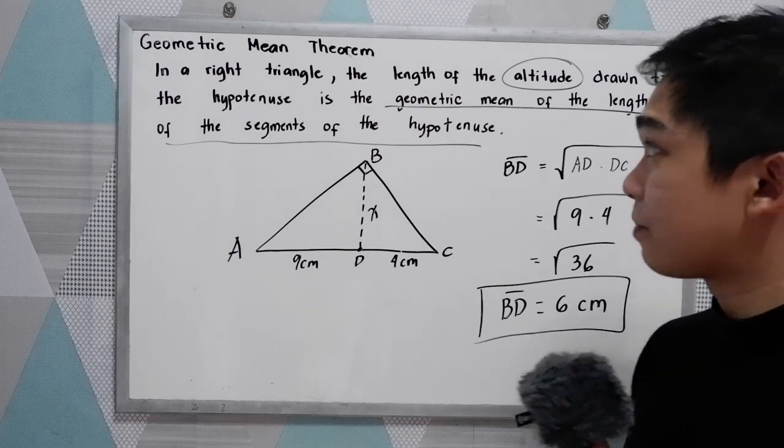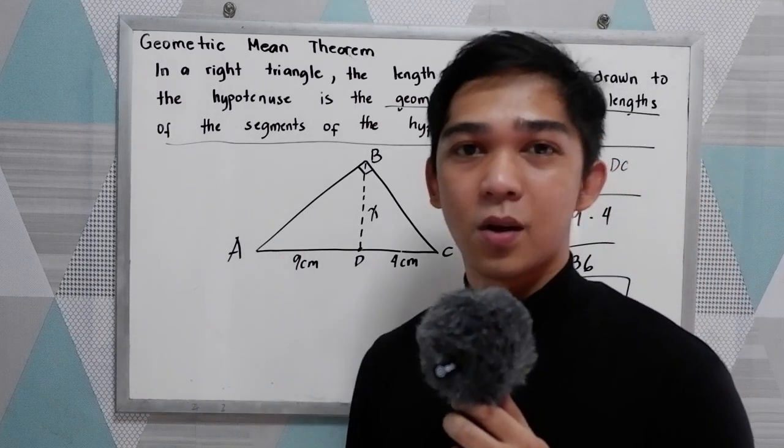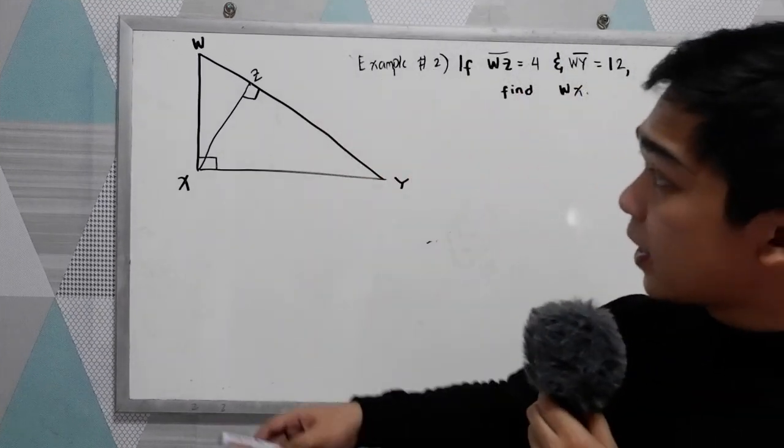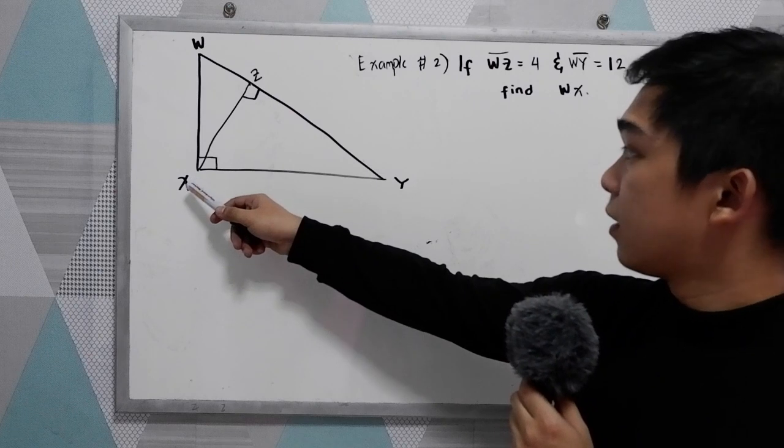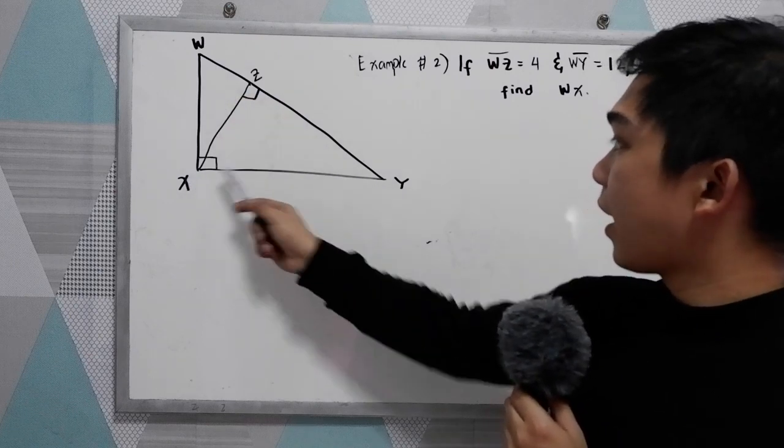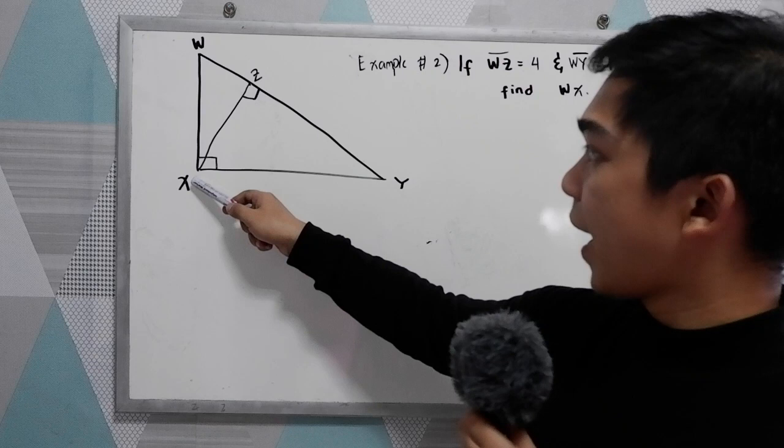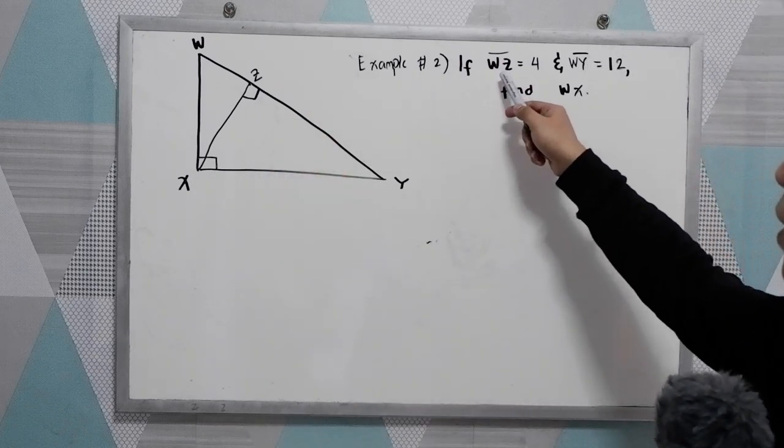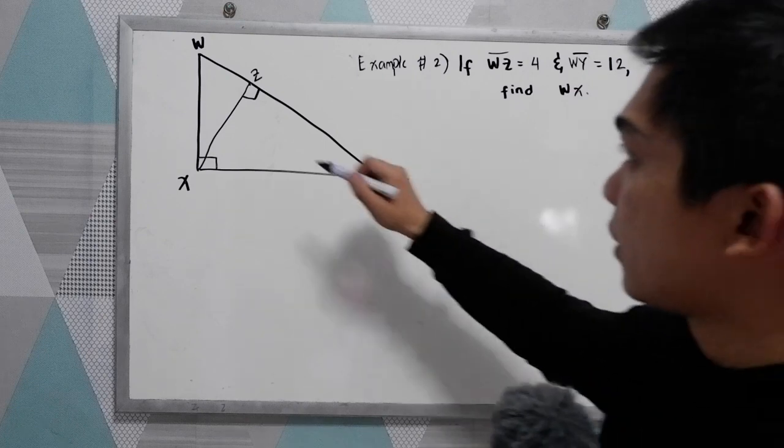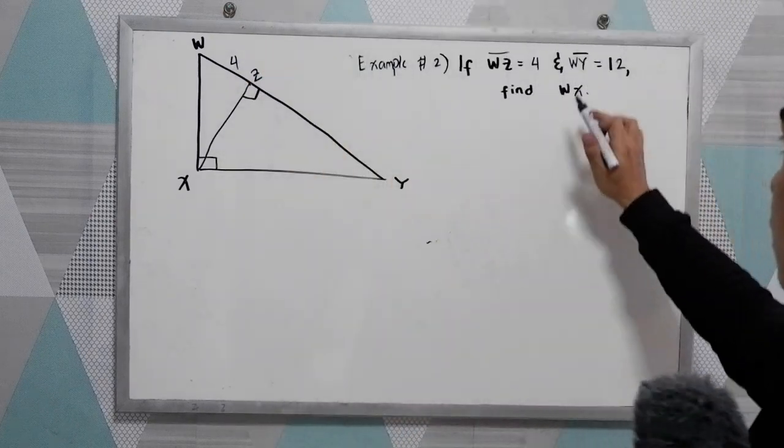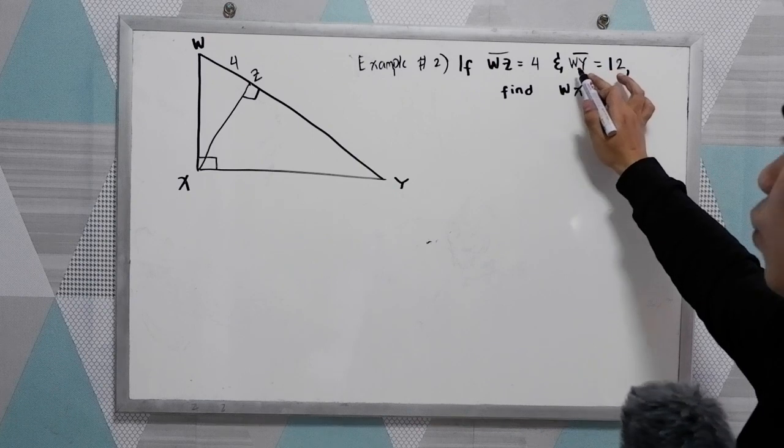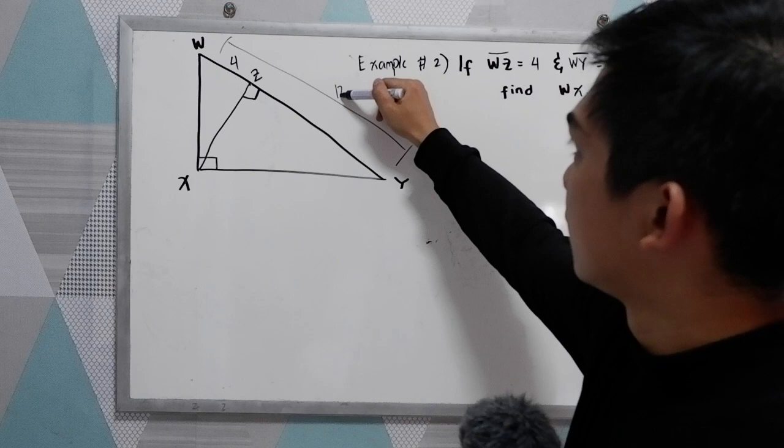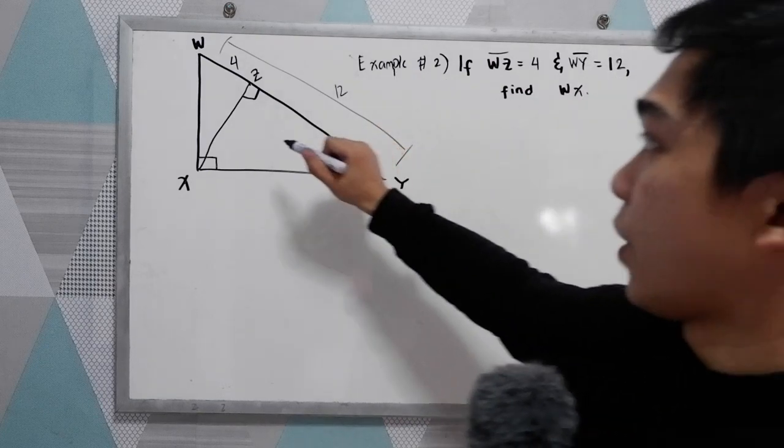That is the geometric mean theorem. Let's have another example. Now, let's have our example number 2. We have our right triangle W, X, Y, and our altitude X, Z. So if WZ is equal to 4 and WY is equal to 12, find WX.